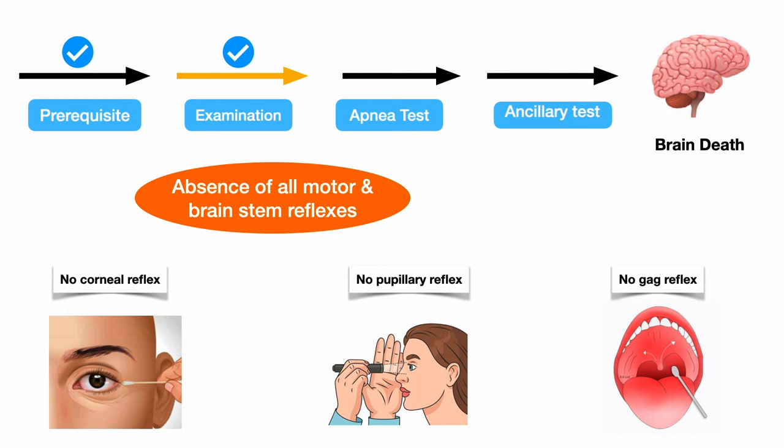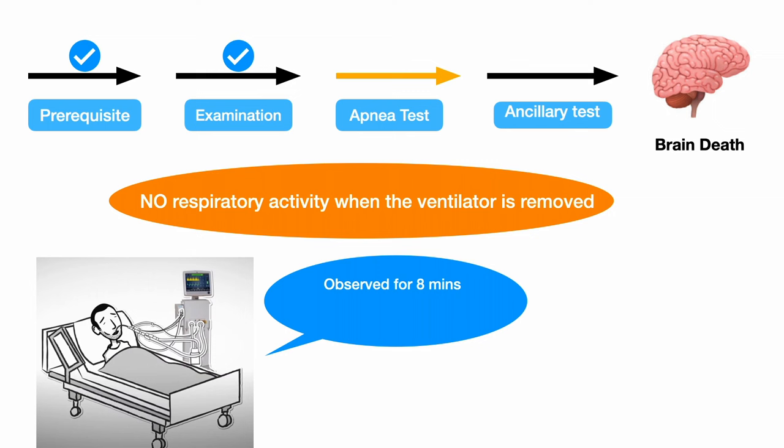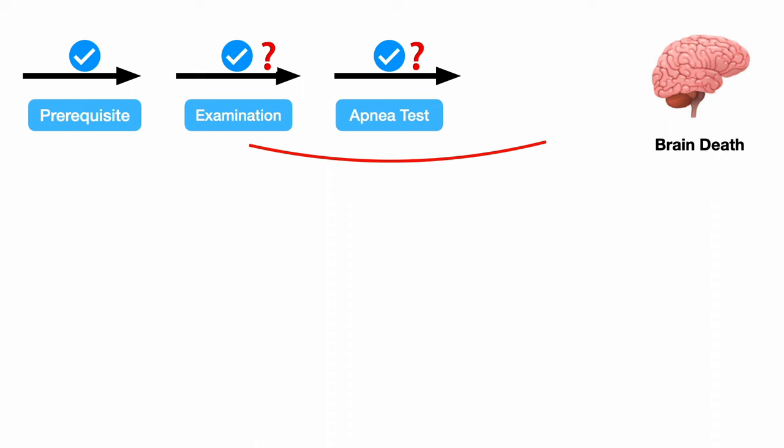Then comes the apnea test — a test to ensure there is no respiratory activity when the ventilator is removed. It is observed over 8 minutes, with PCO2 rising to more than 60 or more than 20 from the baseline. If at any point there is doubt in the examination or apnea test, we proceed to the ancillary test.